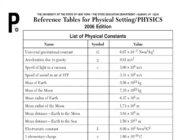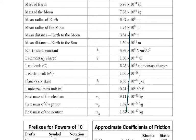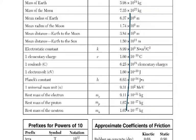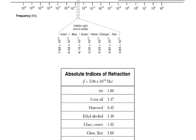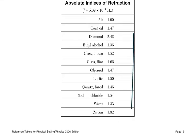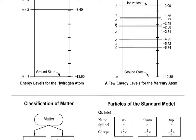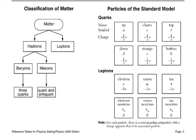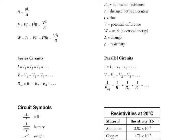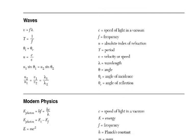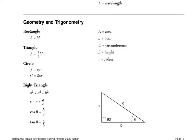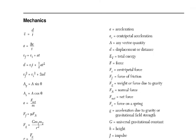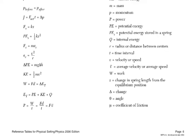Here are the reference table pages. Page one and page two — we might need both of those. Page three — we'll definitely need that. Page four — I don't think we'll need that. Page five — we'll need that; there are equations there. And page six, I don't think we need that either.